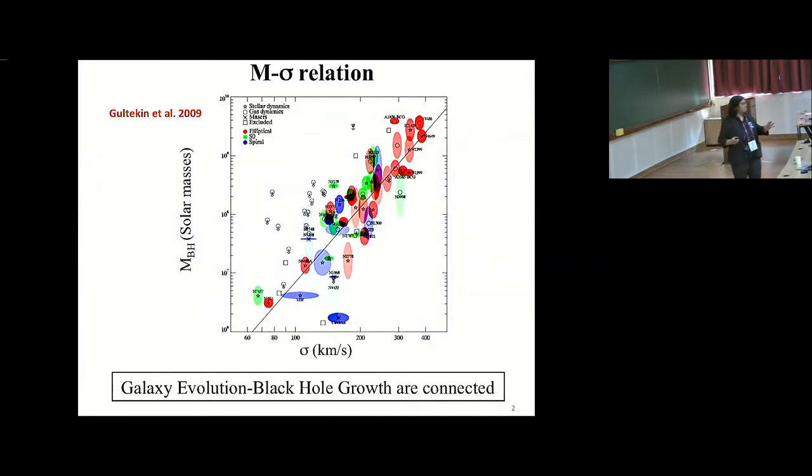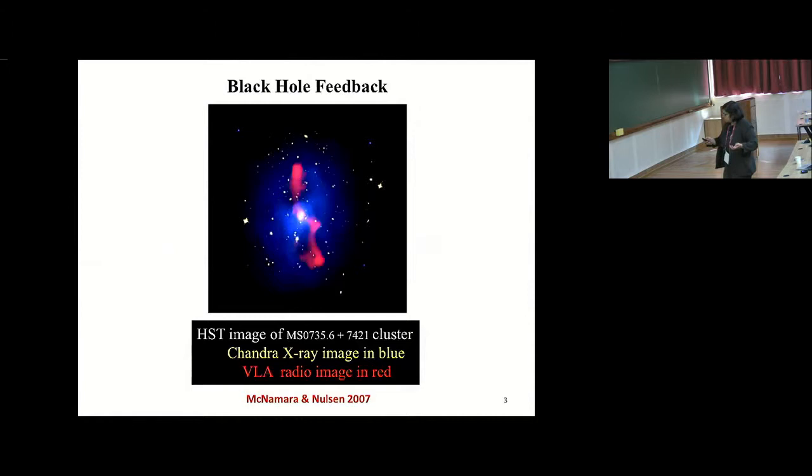So the immediate understanding was that there must be some connection, some communication going on between the central supermassive black hole and the large scale gas and star. An answer that was provided to these kinds of correlations is something termed in the literature as black hole feedback, which says that the black hole just injects energy and particles into the intergalactic inter-cluster medium.